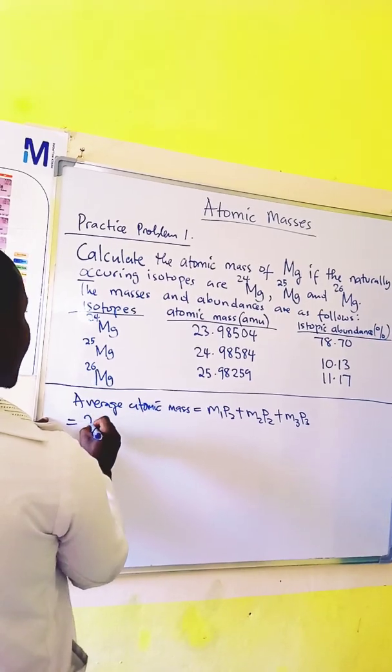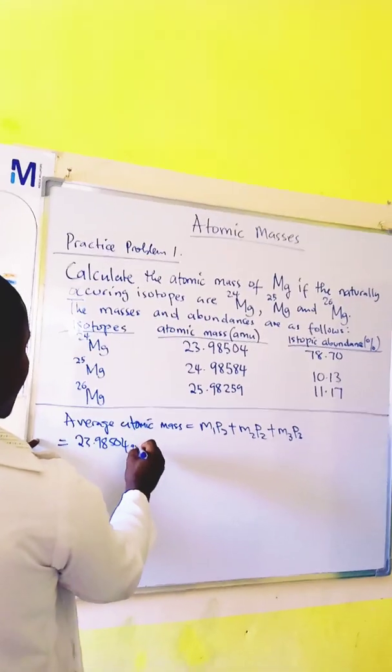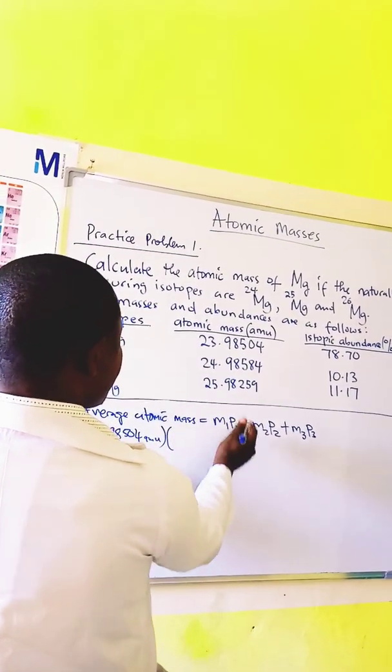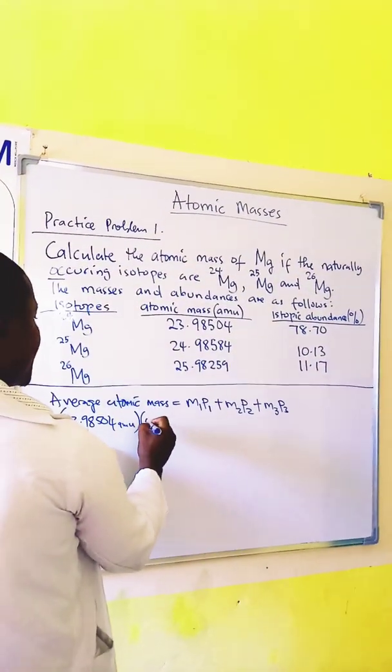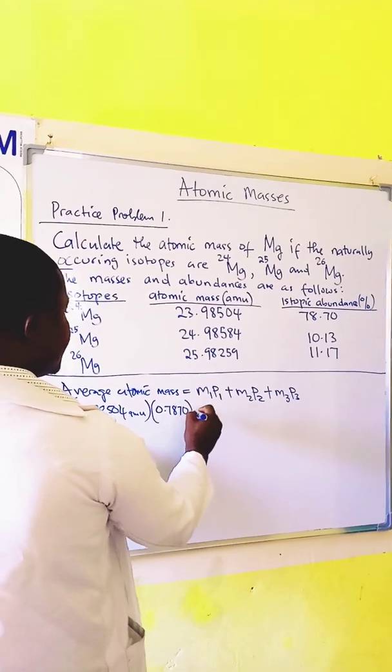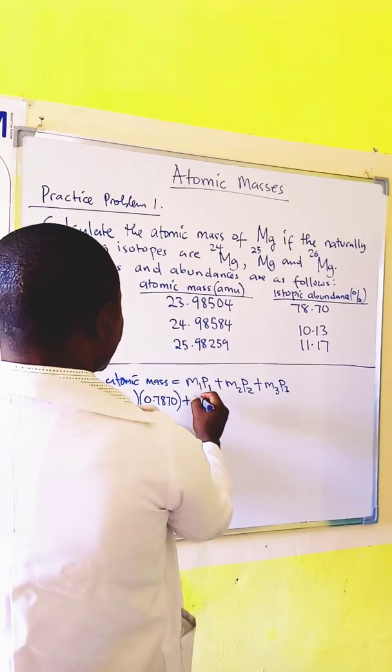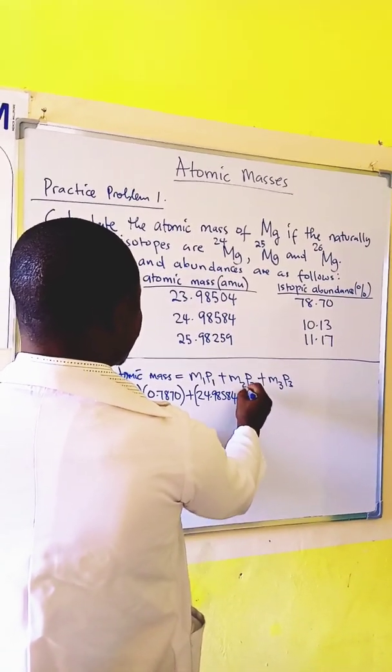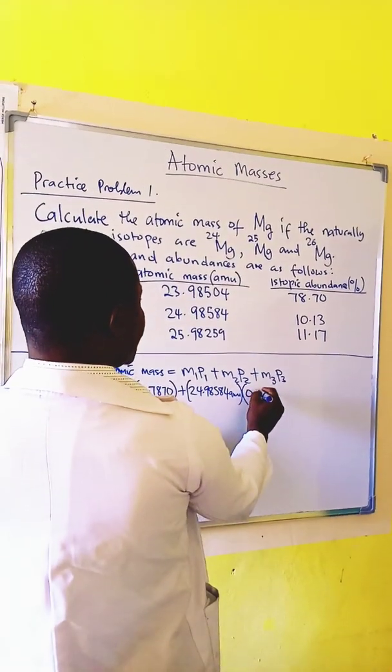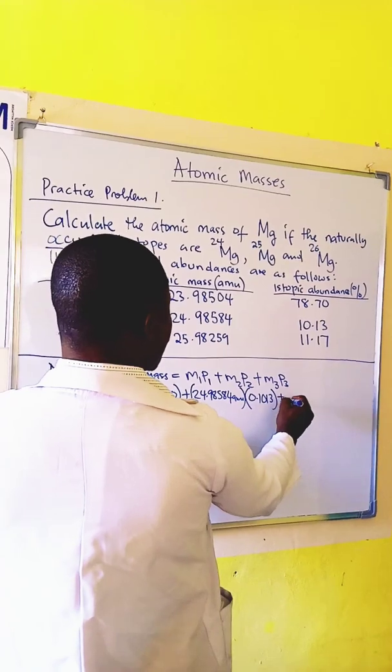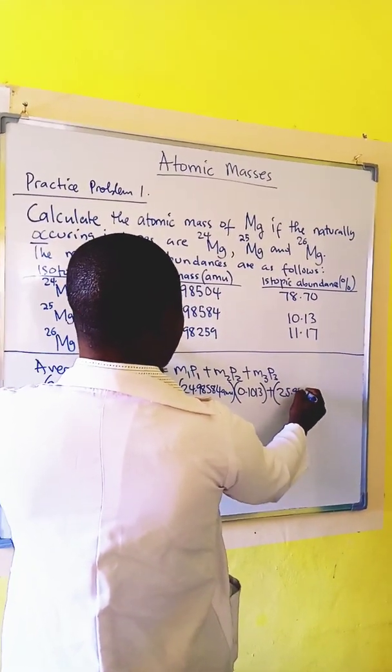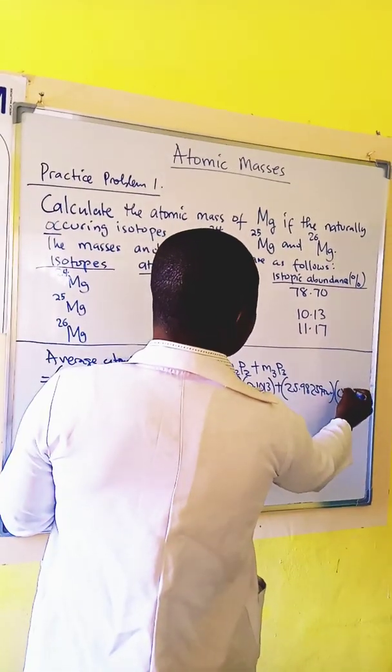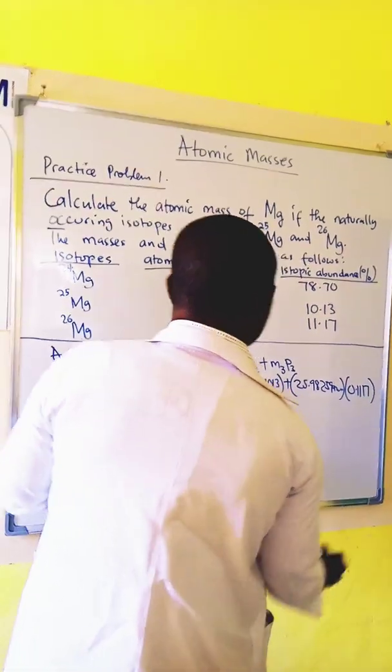In this case our M1 is 23.9850 amu. P1, the percentage divided by 100, is 0.7870. Then plus M2, which is 24.98584 amu, multiplied by 0.1013. Then plus 25.98259 amu multiplied by 0.1117.